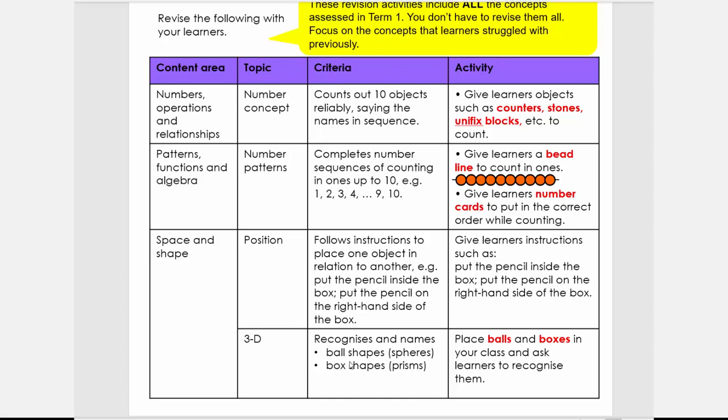Then what you're going to do is there's a 3D activity where you're going to place balls and boxes in your class or at home and ask learners to recognize them. At home what you can do is you can have one ball, one box. If you don't have a ball, take old paper or take a pair of socks and roll it into a ball, so then it's a ball-like object. Boxes can be any box in your home. So I want you to pause here, and the most important part is to go through these four activities.